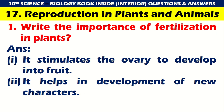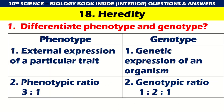Write the importance of fertilization. Chapter 17: Reproduction in plants and animals. It stimulates the ovary to develop into fruit, and it helps in the development of new characteristics. Chapter 18: Differentiate phenotype and genotype. Phenotype is the external expression of a particular trait in an organism. The phenotypic ratio is 3:1 and the genotypic ratio is 1:2:1.